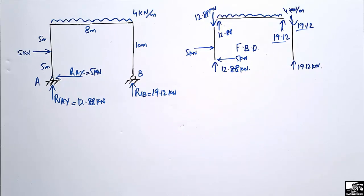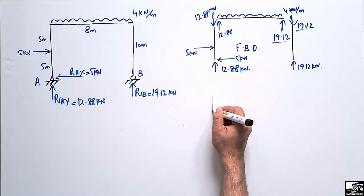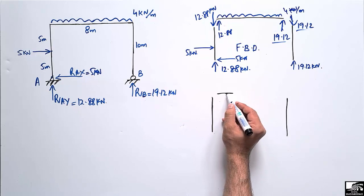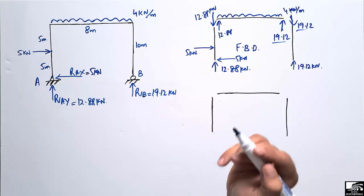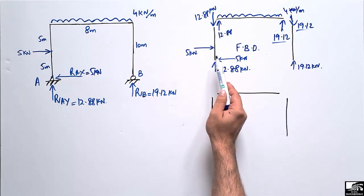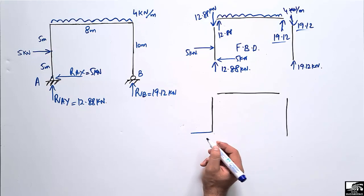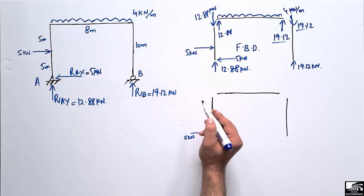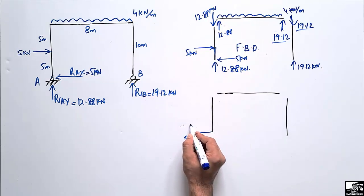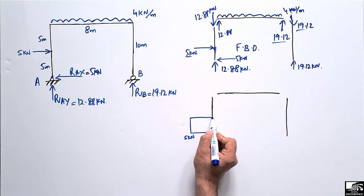To draw the shear force diagram, we start with the left column. There is only a horizontal force of 5 kN acting outward on this column. So the shear force is 5 kN, which remains constant up to the point of application. Then there is 5 kN acting inward, which closes the diagram back to zero. The shear force diagram for this column is a rectangle of 5 kN.